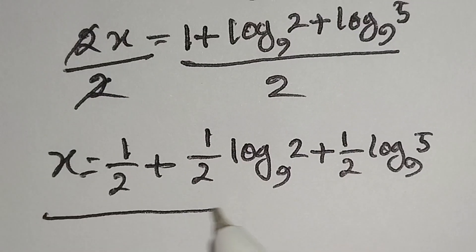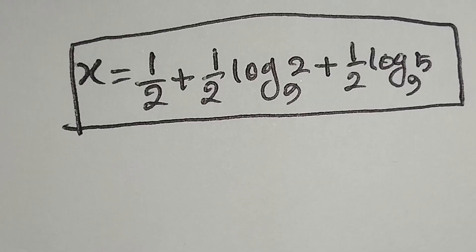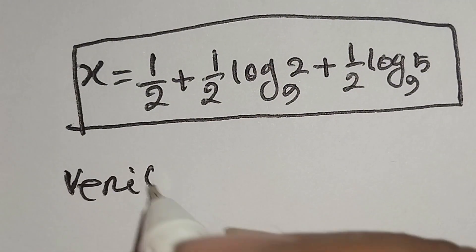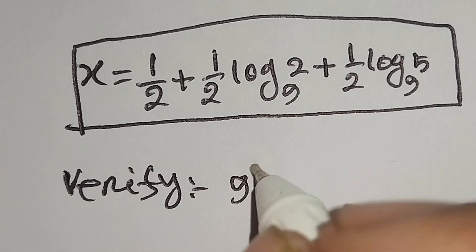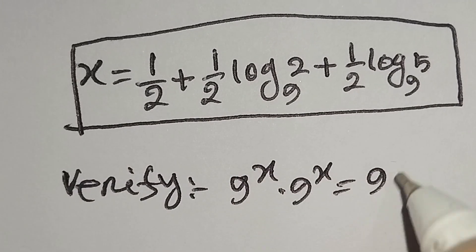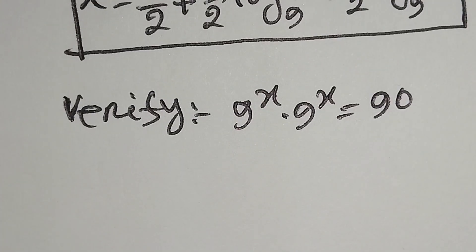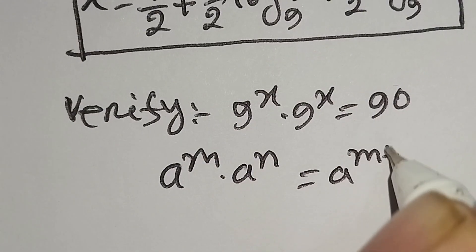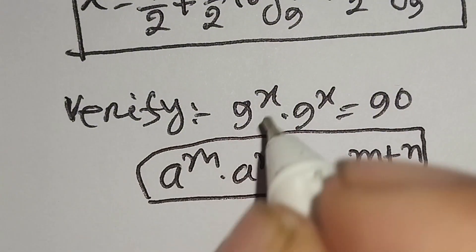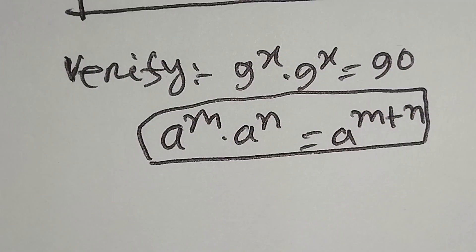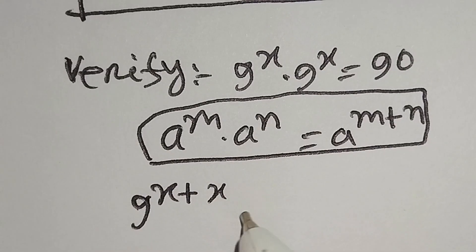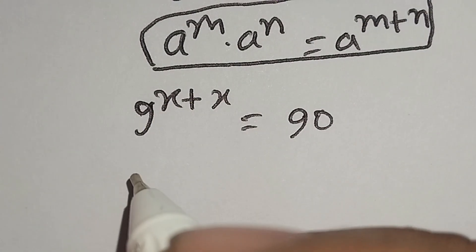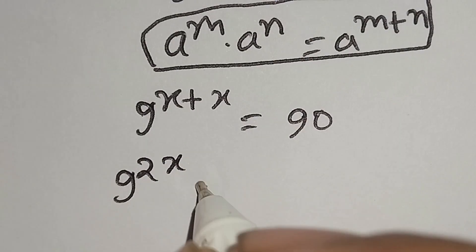Now we will verify that this value is correct. Our main equation is 9 to the power x times 9 to the power x is equal to 90. Using the identity a to the power m times a to the power n equals a to the power m plus n, we write 9 to the power 2x is equal to 90.